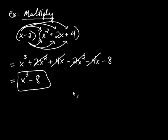When you multiply polynomials together, you always start with the polynomial with the fewest number of terms and multiply each of those terms by the other polynomial. Until next time.